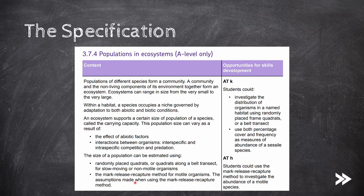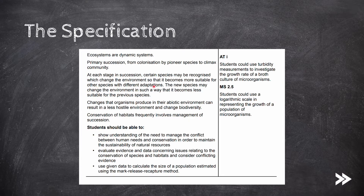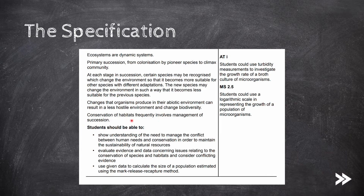We should know the assumptions made when using the mark-release-recapture method. We should also know that ecosystems are dynamic systems. We will cover succession, including primary succession from colonisation by pioneer species to climax community, and how at each stage certain species change the environment so it becomes more suitable for other species with different adaptations. The new species may change the environment so it becomes less suitable for the previous species. Changes that organisms produce in their abiotic environment can result in a less hostile environment and change biodiversity. Finally, we will cover conservation of habitats and how it involves management of succession.